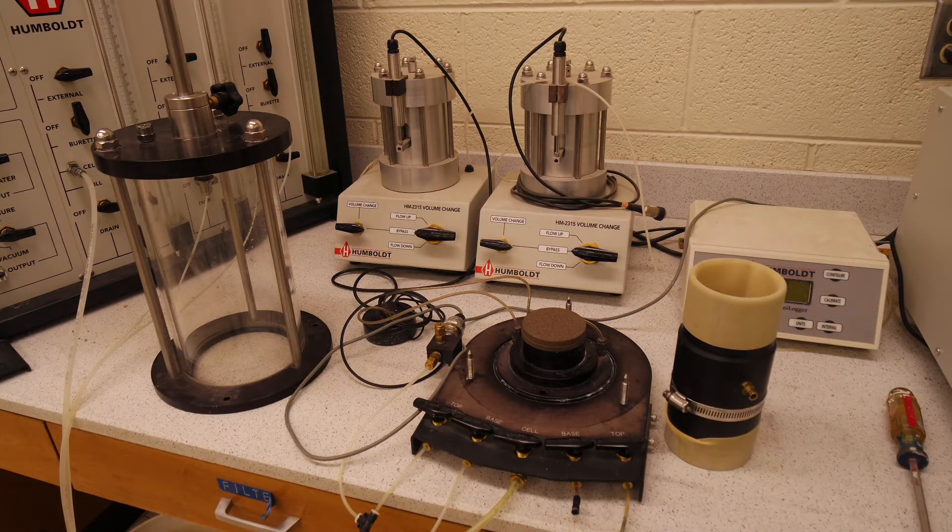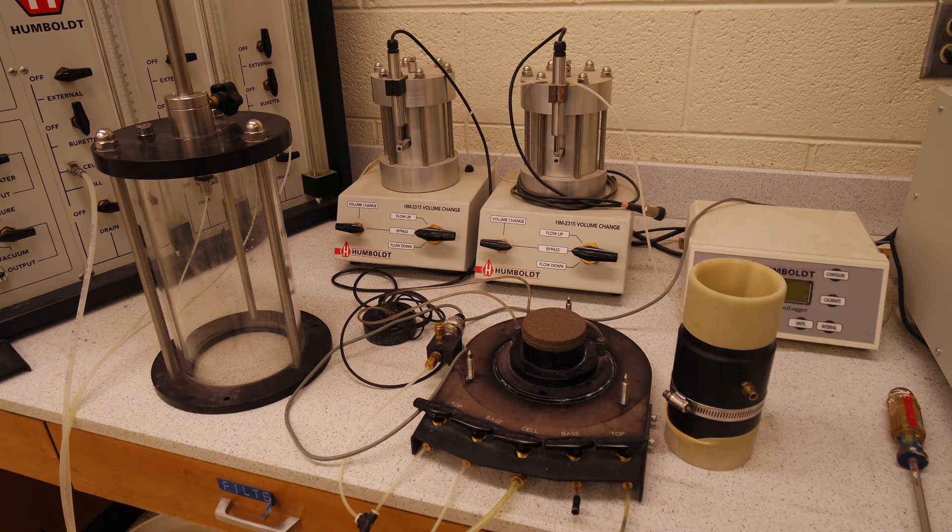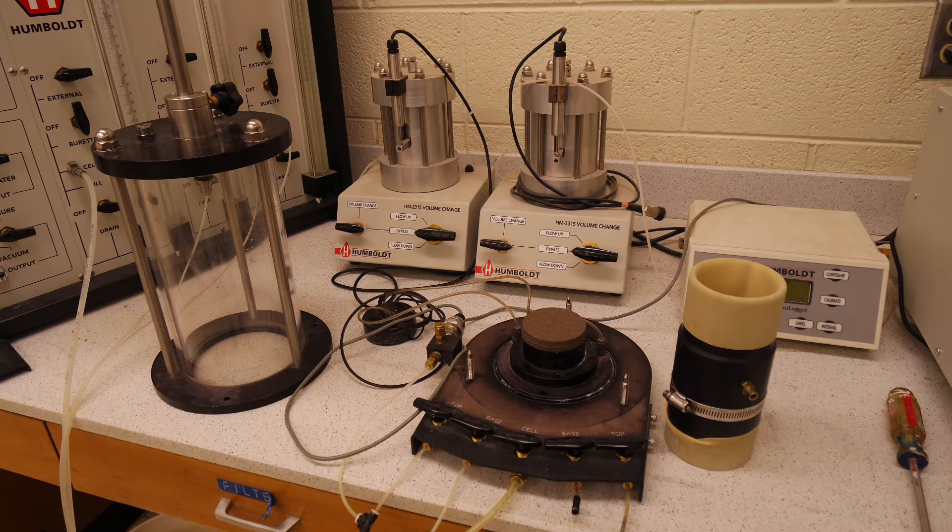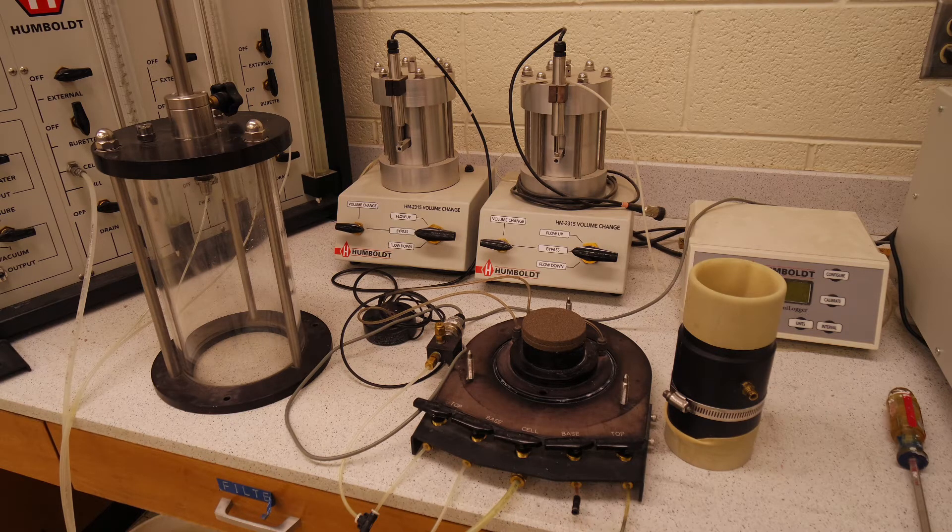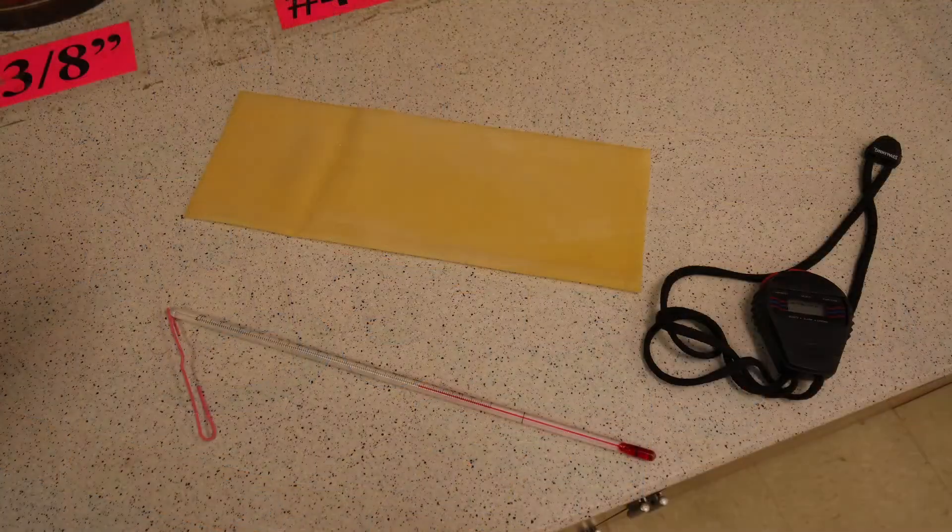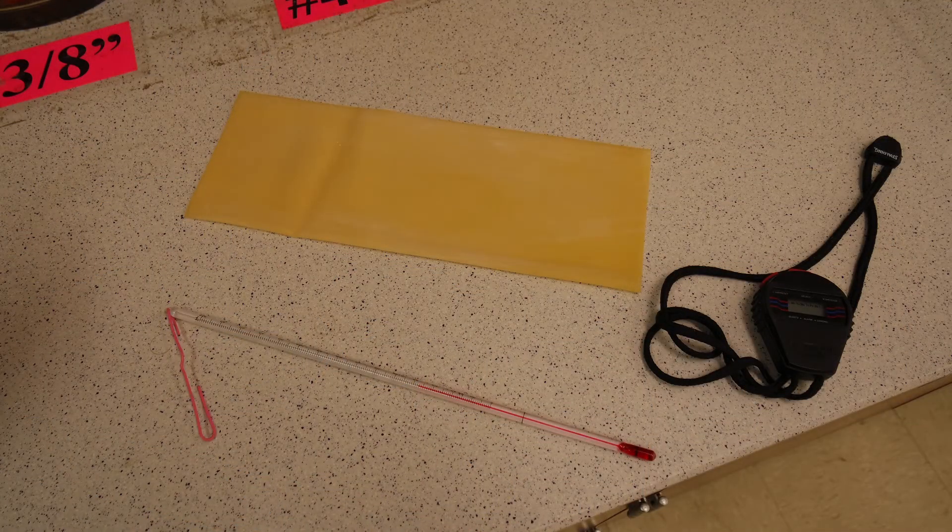We will need the following items to perform this test: constant and falling head permeability device with flexible wall triaxial cell, a thermometer, stopwatch, and our sand sample.